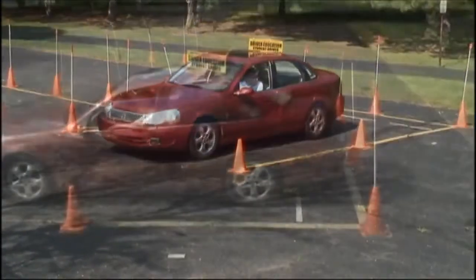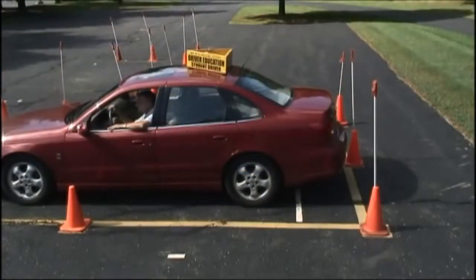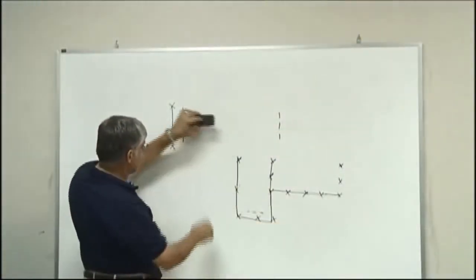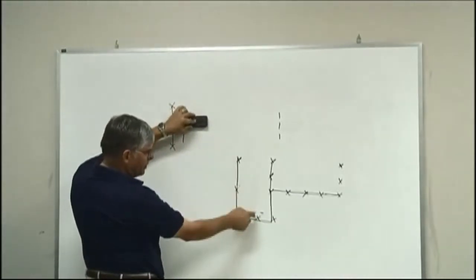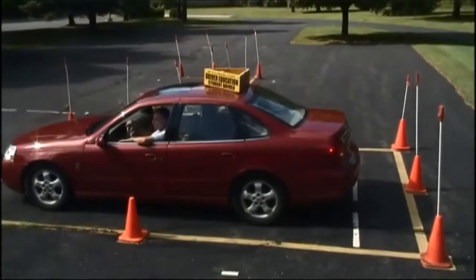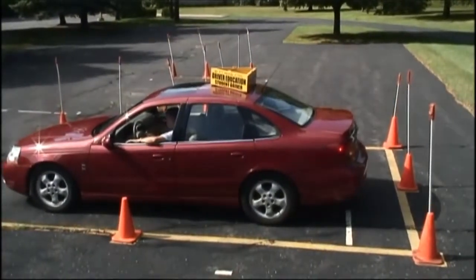And to ace it, you're going to stop your back bumper within two feet of the cone that pulls back here. You can look out your window, of course, and do anything you want in order to get yourself into position and back into this spot. When you're done, you put your vehicle in park and tap your horn.